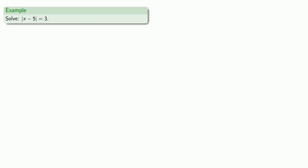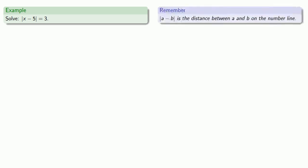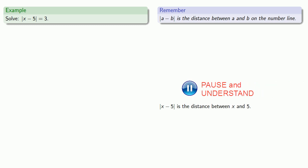For example, let's try to solve this. How you speak influences how you think, so rather than reading this as 'absolute value of x minus 5 equals 3,' it's better to read this as 'the absolute difference between x and 5 is 3.' The absolute difference a minus b is the distance between a and b on the number line, so the absolute difference x minus 5 is the distance between x and 5. The equation says that distance equals 3, so we're looking for something that is 3 away from 5.